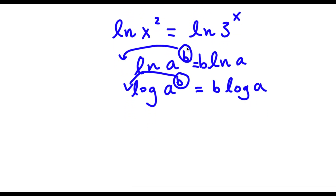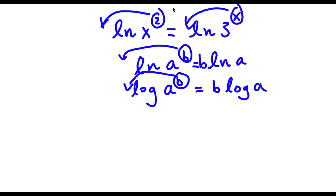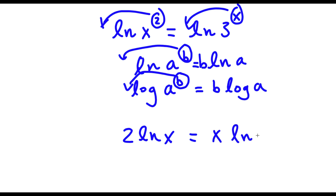So in this case, we're using ln, so now we can move our exponent to the front for both of them. So now I'm going to have 2 times ln x is equal to x times ln 3.